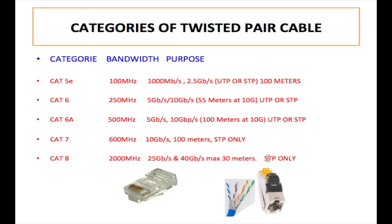We cannot use unshielded twisted pair with Category 7 or Category 8. For all of these cables we use an RJ45 type connection. Category 8 cables have two choices: the traditional RJ45 connection, or the new Category 8 connection type. If this training has been helpful, don't forget to click the subscribe button to be notified when new videos are released. My name is Trevor from Telecom Training — thank you for watching.